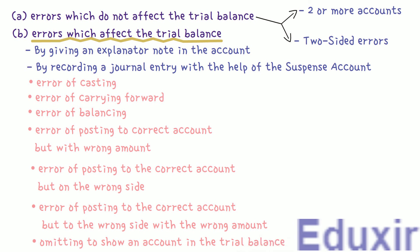In a real situation, there can be many one-sided errors which cause a difference in the trial balance. To rectify these, we need to open a suspense account. When the trial balance is not in agreement and there are many one-sided errors, it is not possible to rectify all the errors immediately. So we open a suspense account, make the total of debit and credit columns equal, and proceed with the accounting process. When these errors are located at a later point of time and the specific accounts and amounts involved are identified, the amounts from the suspense account are transferred to the relevant accounts and then the suspense account is closed.